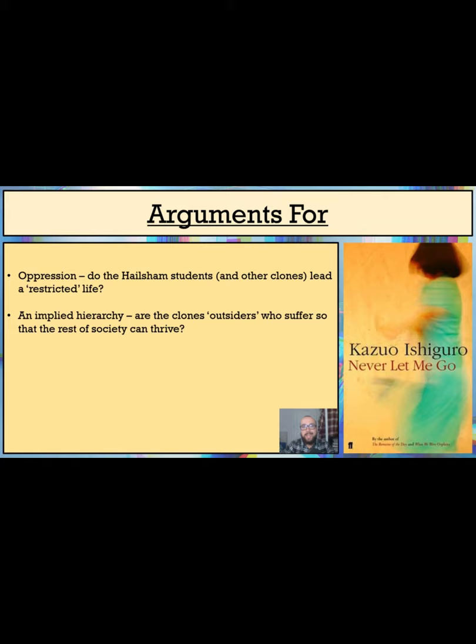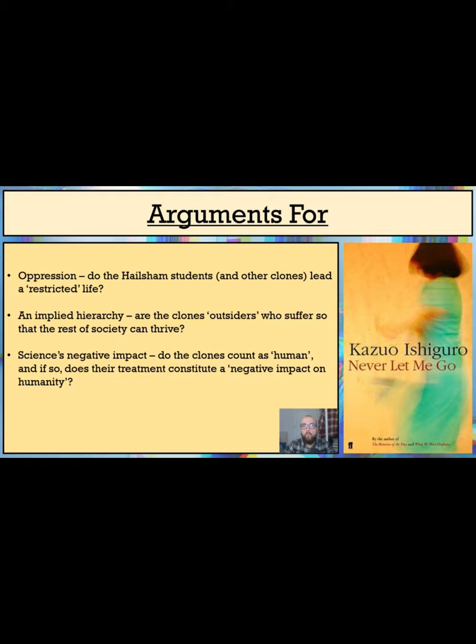Claeys suggests that literary dystopias often depict the negative impact of scientific developments on humanity, and this is what I would like to focus on next. Much of the novel seems preoccupied with debating whether the donors are human or not. Now this debate doesn't really reach a definitive conclusion. On the one hand, the donors seem flawed and very human. They are capable of falling in love, having enormous bust-ups, and producing written and visual art, which apparently proves that they have souls.